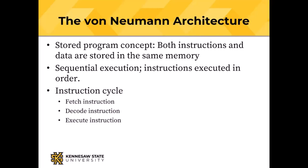Von Neumann described the instruction cycle: fetch an instruction from memory into the CPU, decode the instruction — the instruction is a binary number and the CPU needs to decode it so it knows what the instruction means, which is just combinational logic circuits. We feed the binary number of the instruction into combinational logic, and the right circuits to perform that instruction get enabled.